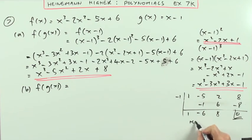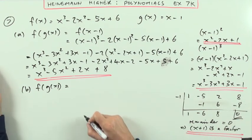Now I'll make a wee statement. Because it's a higher question. If the remainder is 0, that means that (x plus 1) is a factor. Even though I didn't say directly demonstrate that, I'll just put that down for safety's sake.